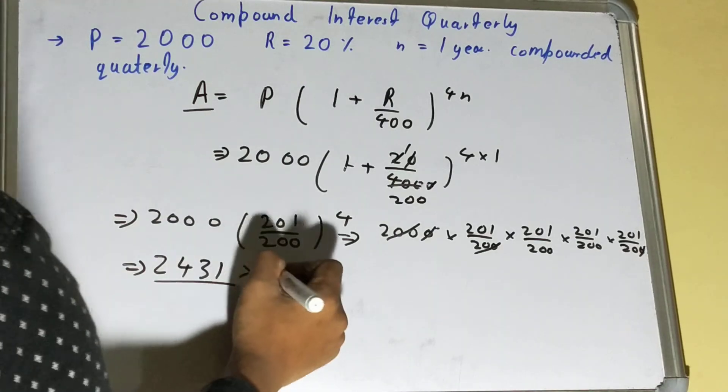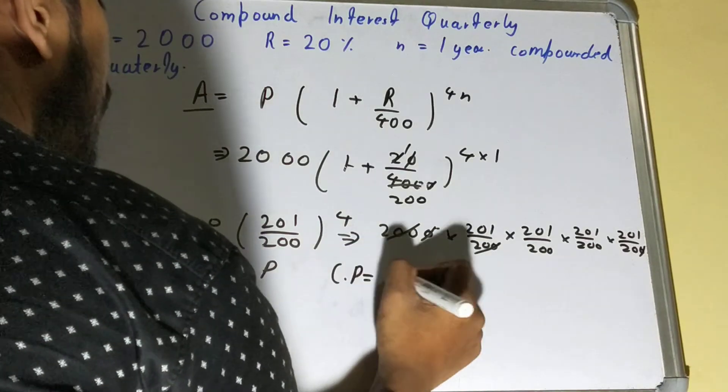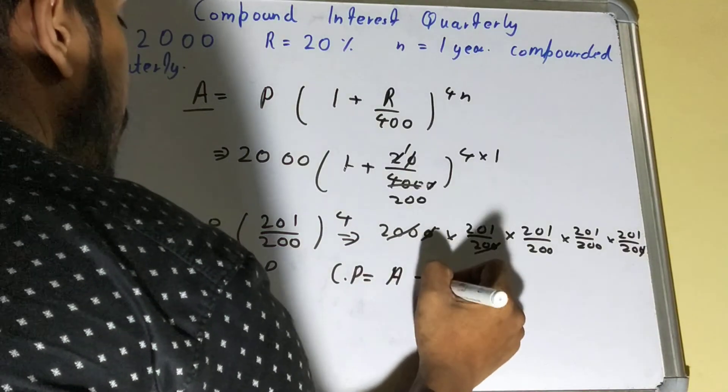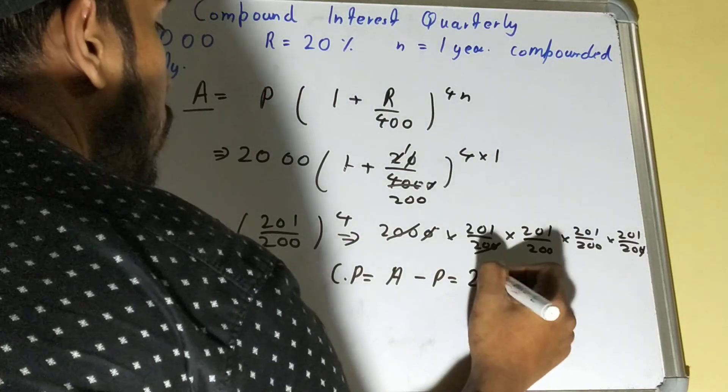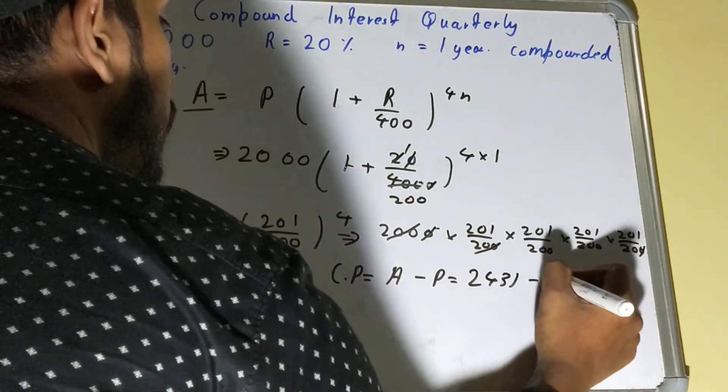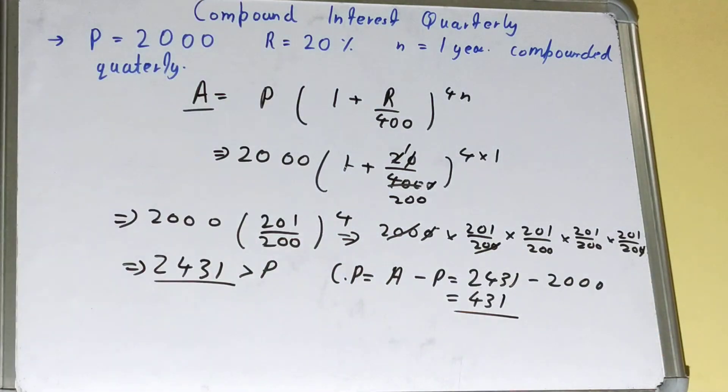Which will be greater than your principal amount. Now to find the compound interest, just subtract the principal amount from your total amount. So your total amount is 2431, your principal amount is 2000. The answer you will get is 431, that will be your compound interest on the quarterly basis.